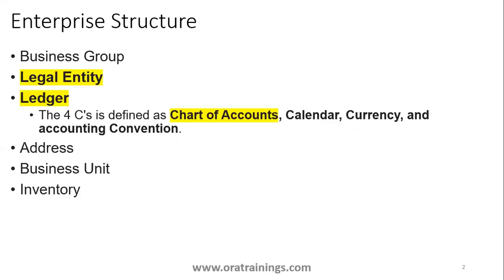To understand the chart of accounts, first we have to understand where it comes into picture. For any Oracle Fusion ERP instance, when configured, the setup generally starts with the business group, then you'll have a legal entity, then a ledger, and then the business unit, inventory, and sub-inventory. Our concentration is only on the chart of account part, but to understand it, we need to understand where exactly it is used — that is why ledger and legal entity will also be considered. This session has more of a technical perspective; we will discuss what tables are involved for legal entity, ledger, and chart of accounts.